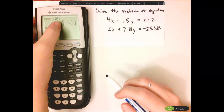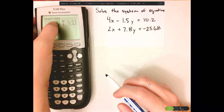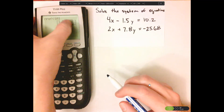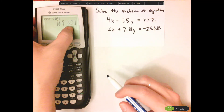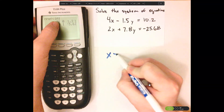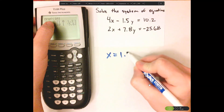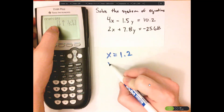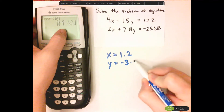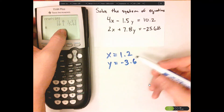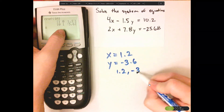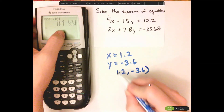So what this means is, again, these are coefficients. So that's 1 for x, then 0, 1, 1.2, negative 3.6. So your solution would be x = 1.2, y = negative 3.6.